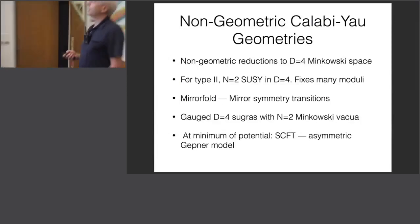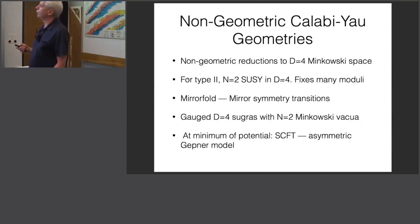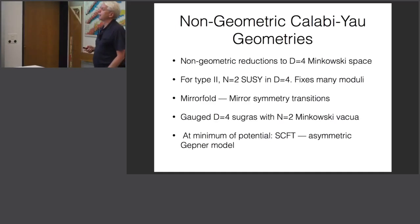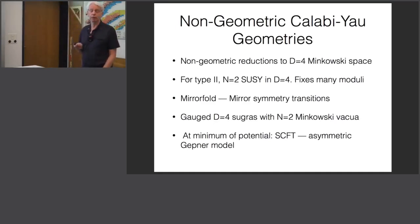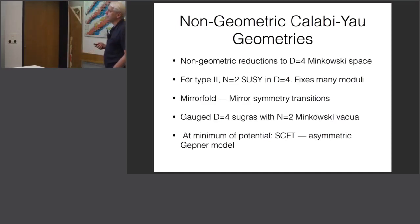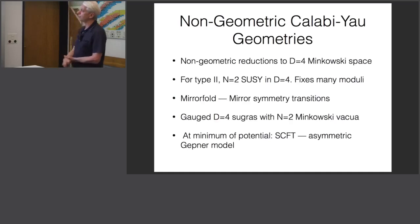What I'll be talking about today is non-geometric versions of Calabi-Yau geometries — reductions to four-dimensional Minkowski space which are non-geometric in the sense just described, and for type II give rise to N=2 supersymmetry in four dimensions, the same amount of supersymmetry preserved by compactifying type II on a Calabi-Yau. This is the excuse for calling it a non-geometric Calabi-Yau. One of the features of these non-geometric type reductions is that they fix many more of the moduli than a conventional Calabi-Yau, motivating the search for more general compactifications with far fewer moduli.